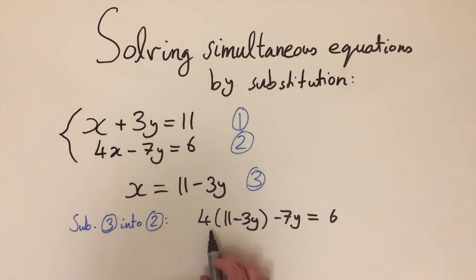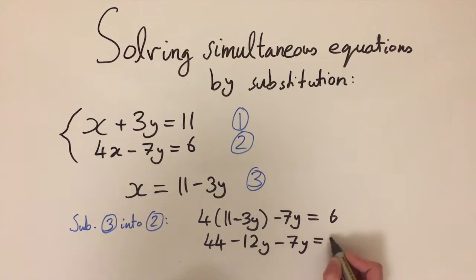Now we've got an equation only involving y's. We've eliminated the variable x and we can solve this very simply. Let's expand out these brackets. We get 44 minus 12y minus 7y, and this equals 6.